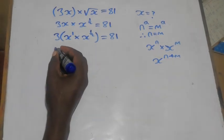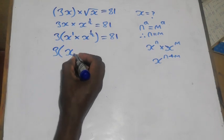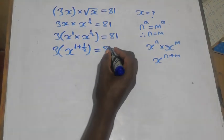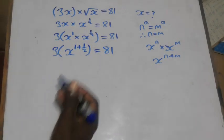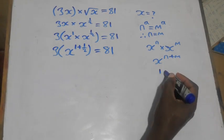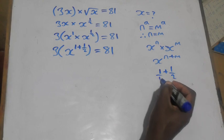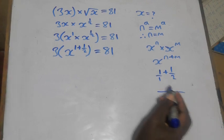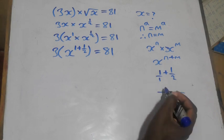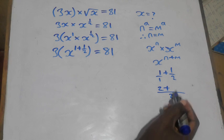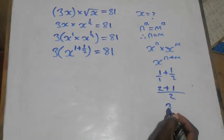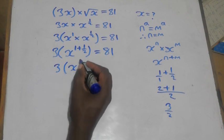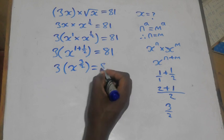Applying that rule here, we write one base and add the powers: 1 plus one-half. Finding the common denominator of 2: 2 times 1 is 2, plus 1 times 1 is 1, so 1 plus one-half equals 3 over 2. The equation becomes 3 times x to the power 3 over 2 equals 81.